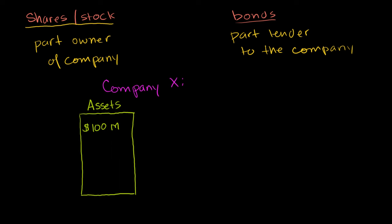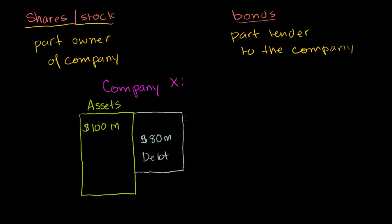Now let's say Company X has also borrowed some money — maybe by issuing bonds. So they owe people collectively $80 million. This could have been a straight debt from a bank, or via a bond issue — maybe they issued a million bonds where each represents a debt of $80. That's $80 million of debt, and let's say that's all of their liabilities.